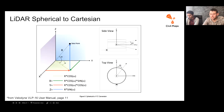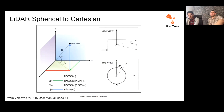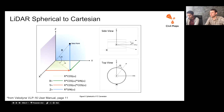Here are some nice views showing the different vertical angles — Omega — and the different horizontal angles — Alpha — as illustrated in the diagram.